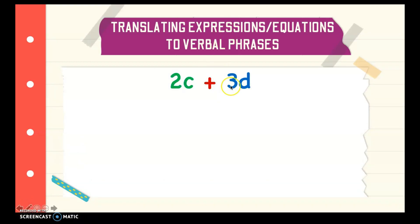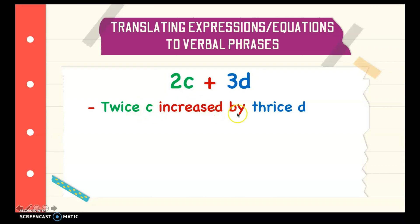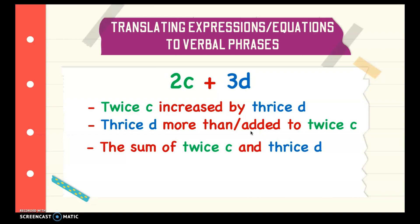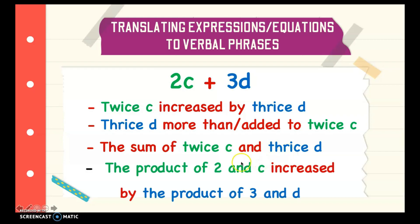Next we have 2c plus 3d. In this case, 2 is multiplied by c, then added to 3 that is multiplied by d. So we can say 2c increased by 3d, since 2 and 3 have special names in multiplication. If you don't want to use that, you can also say 3d more than, or added to 2c. When we use more than or added to, that means we need to switch the two numbers or the two groupings. Next: the sum of 2c and 3d. Or you can also say the product of 2 and c increased by the product of 3 and d.